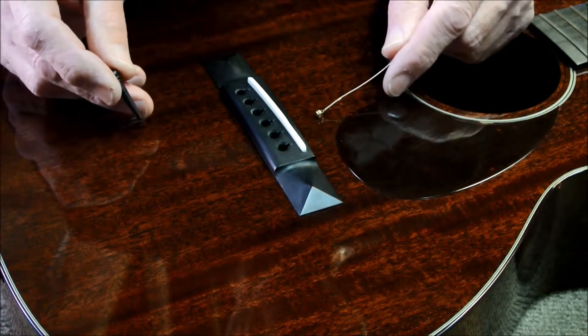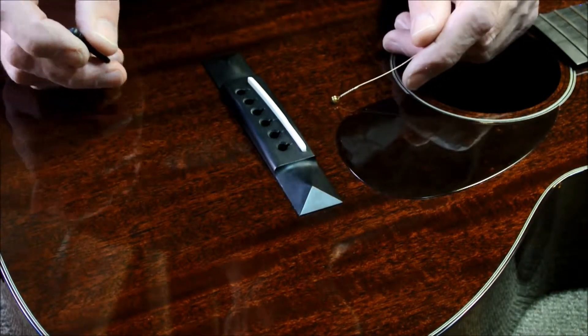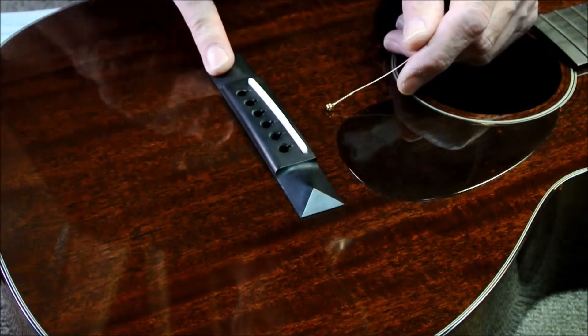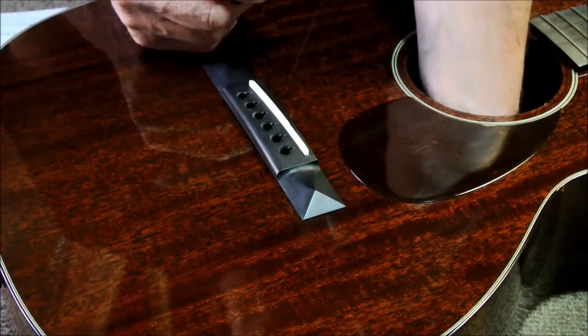Hey, this is Dave again at Westwood Music. A couple of tips on restringing an acoustic guitar. Obviously, this is the bridge. Underneath here is something called a bridge plate which is there to sort of reinforce this area of the guitar.